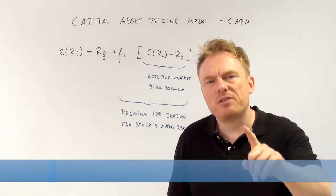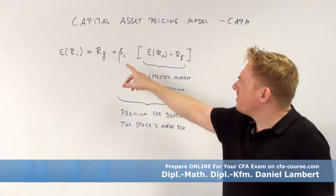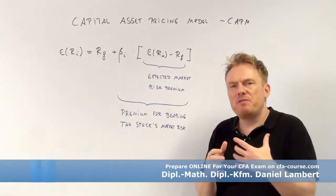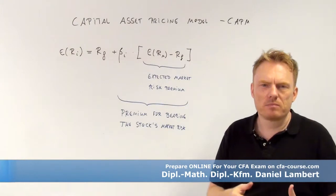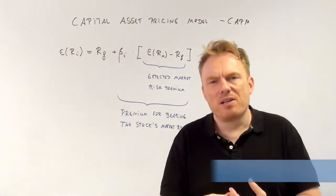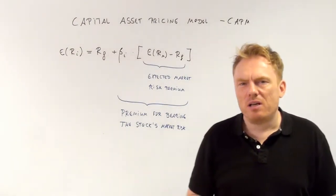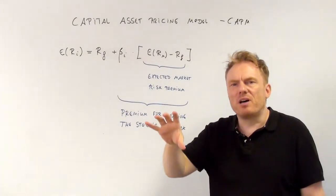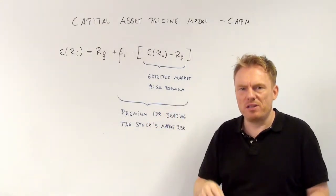But of course, we need to understand what beta means. Say if beta is 1.3, we mean the given share is 30% more volatile than the overall market.